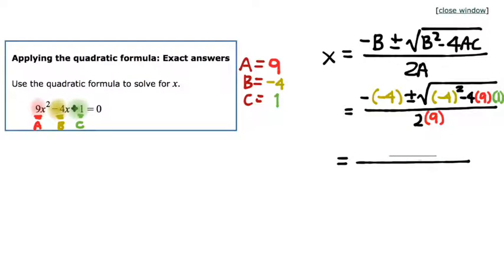That means underneath this radical, I have negative 20. Out in the front, minus negative 4 is going to give me 4. I've got plus or minus. Downstairs, I have an 18. After we do all the arithmetic that's fit to do, this is what it looks like.